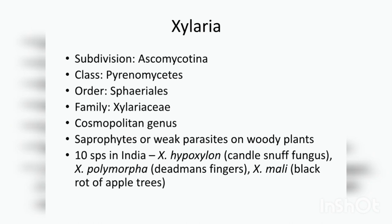Xylaria is a cosmopolitan genus. It is a saprophyte or weak parasite, and they are found on woody plants. In India, about 10 species are seen, out of which Xylaria hypoxylon, commonly called candle-snuff fungus, Xylaria polymorpha, commonly called dead man's fingers, and Xylaria mali, which causes black rot of apple trees, are usually found.